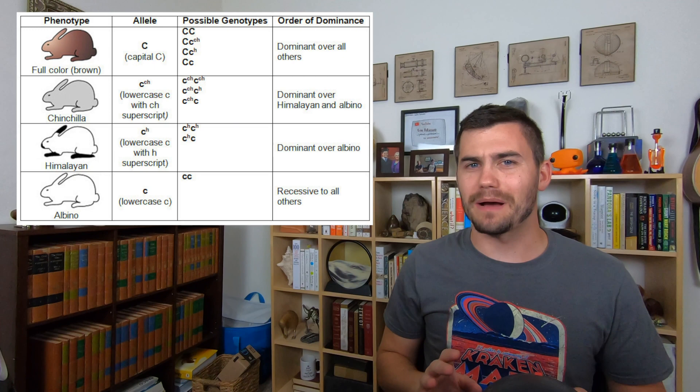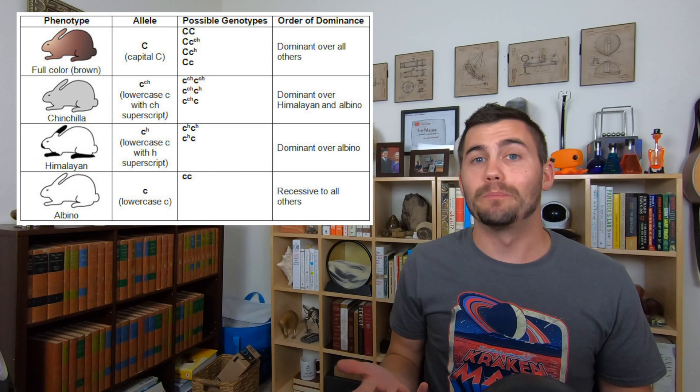Himalayan is only dominant over albino. So there are only two genotypes that produce it. And finally, albino coats can only happen if the rabbit inherits two albino alleles.